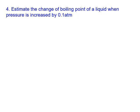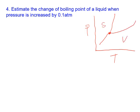Question number four: estimate the change of boiling point of a liquid when pressure is increased by 0.1 atmosphere. On the phase diagram we have solid, vapor, and liquid phases. We are talking about the liquid-vapor phase boundary. Suppose we start at a point here and the pressure increases by 0.1 atmosphere — the question is what is the temperature change?